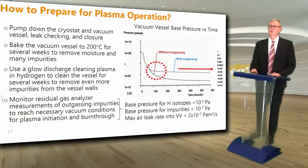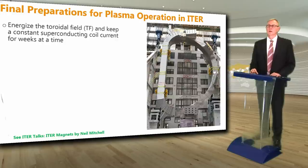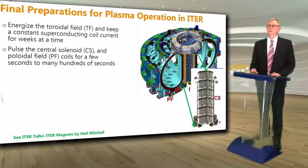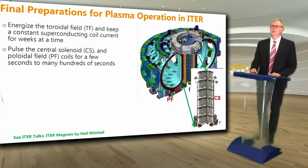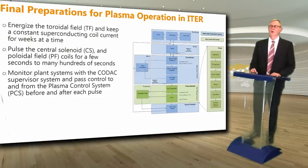This graph shows the vacuum vessel base pressure gradually decreasing with time as the vacuum conditions improve. The final preparations for plasma operation will be to energize the toroidal field and keep a constant superconducting TF coil current for weeks at a time, pulse the central solenoid and the poloidal field coils for a few seconds to many hundreds of seconds, and then monitor the plant systems with the tokamak supervisor system, passing control to and from the plasma control system (PCS) before and after each pulse.